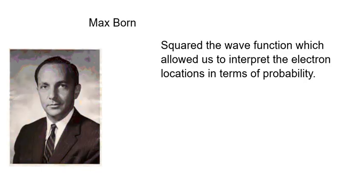Max Born looked at the wave function that Schrödinger came up with and said there's no way to interpret this wave because you've got pluses and minuses. That all adds up to be zero. So how do you interpret the wave? But if you square the wave function, you don't have that problem. You don't have any negatives. When squaring the wave function, it allowed us to interpret the electron locations in terms of probability.